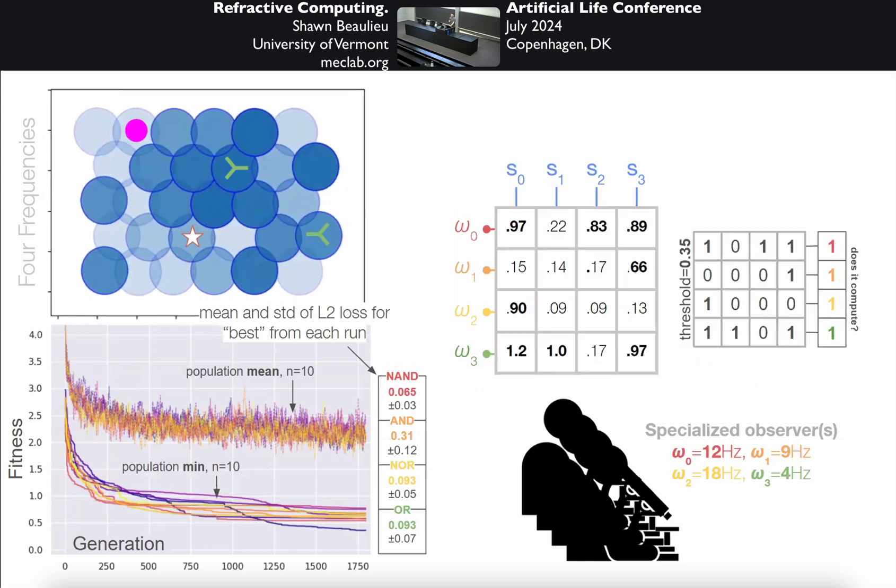If you look at the best performing material from evolution, which drives the L2 loss towards zero, we get pretty much exactly what we asked for: high gains where we want them, low gains where we want them. We can give a binary representation of this matrix like we have on the right, or we just use some thresholding and then ask if the system computes the four logic gates. In all four cases, we see yes, it does.